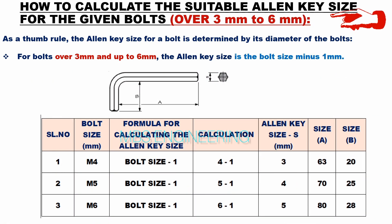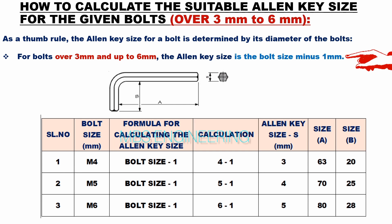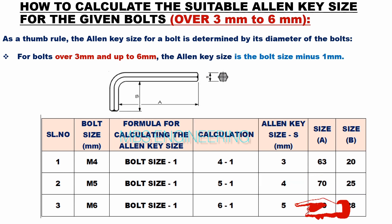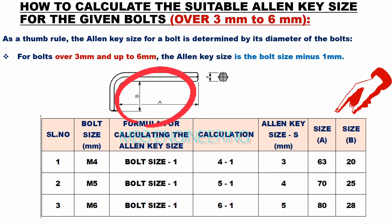Based on the given data and calculation, M4 bolts allen key size is 3 mm. For M5 bolts, the allen key size is 4 mm. For M6 bolts, the allen key size is 5 mm. Please also refer to the standard dimensions A and B for the allen keys.